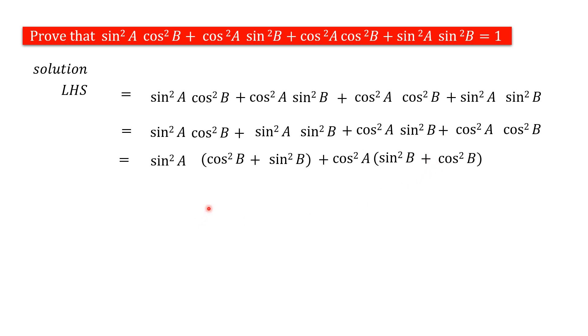Next, we have to use one of the trigonometric identities: sin²θ + cos²θ = 1. So we can take this value as 1 because here theta is same. So cos²B + sin²B equals 1.